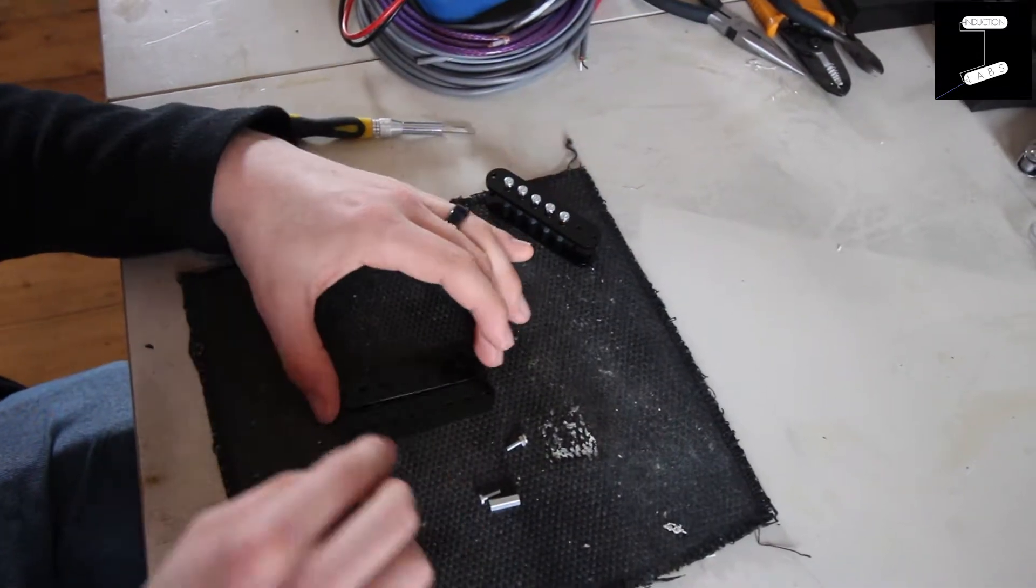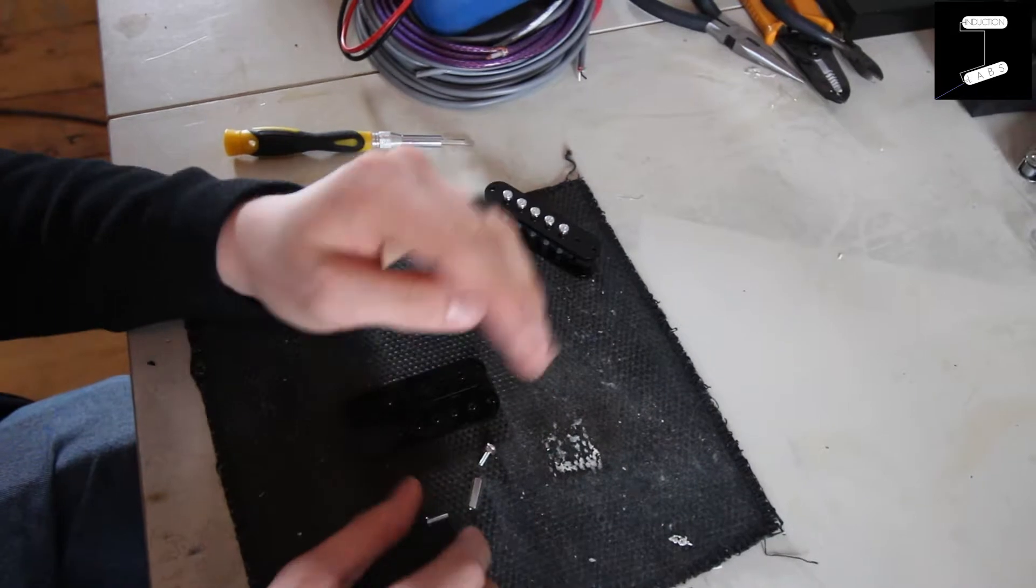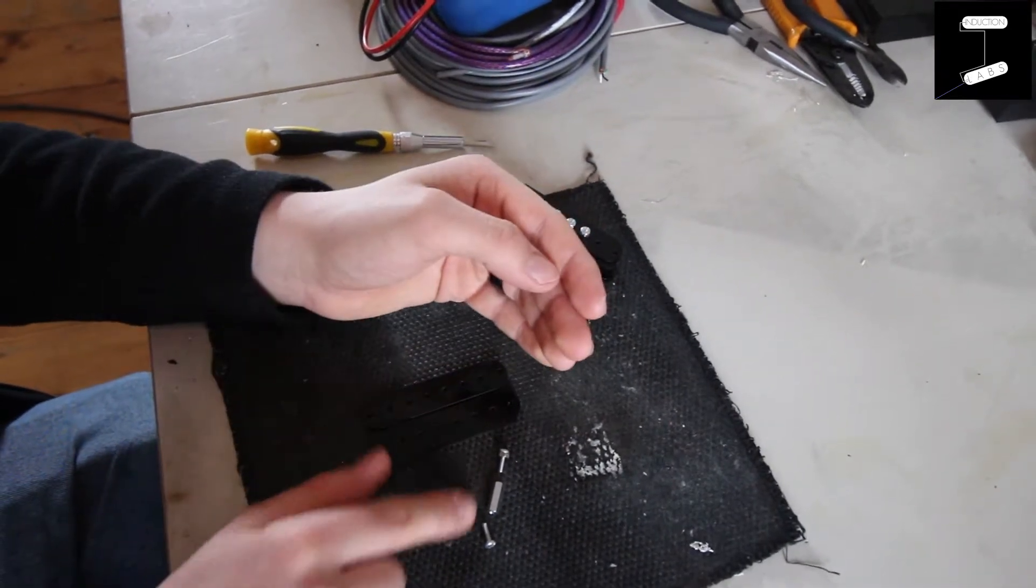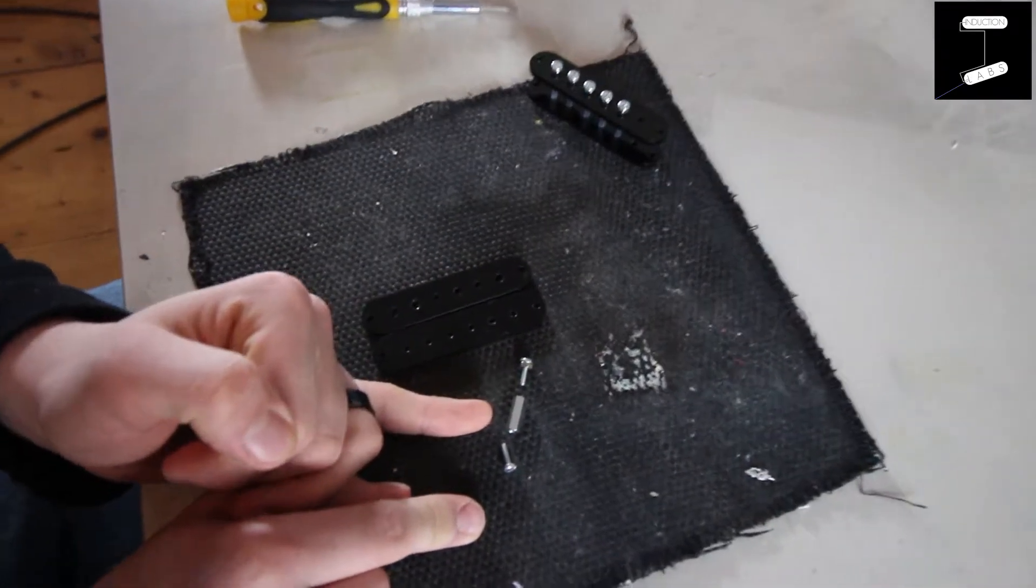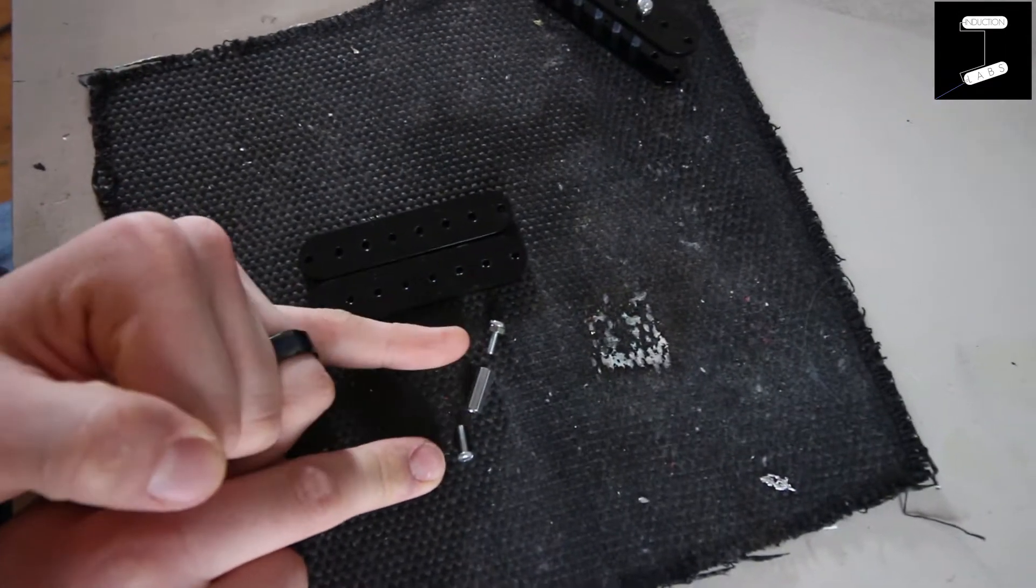Literally, a bobbin consists of two plates and then however many strings you've got, you'll have that many pairs of cores which consist of your central nut, a bottom screw, and a top screw.